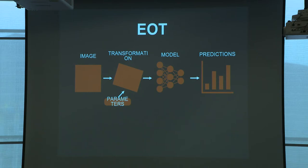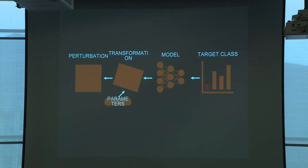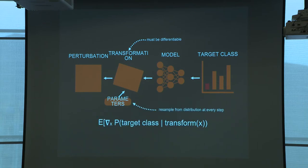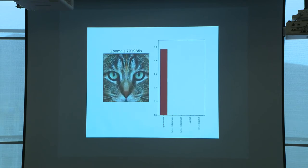The algorithm we presented, called Expectation Over Transformations (EOT), works as follows: you have an image, model some transformation and its parameters — degree of rotation, range of scaling, etc. — which are randomized and sampled from a known distribution. You optimize that target adversarial class given the transformation being applied to the image. The transformation must be differentiable for backward differentiation, but most transformations of concern — simple rotations, scaling — are easily differentiable. Applying this method, no matter how much you zoom in, the adversarial classification still persists.